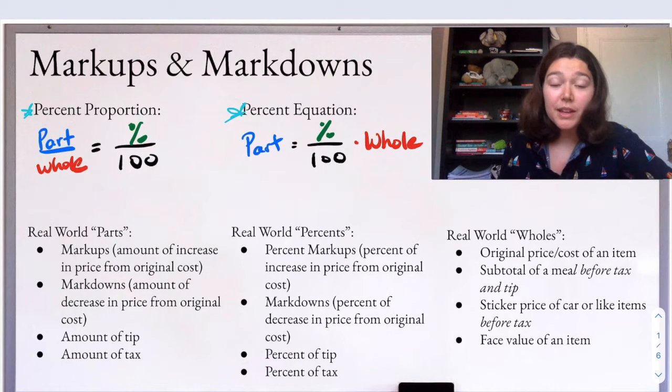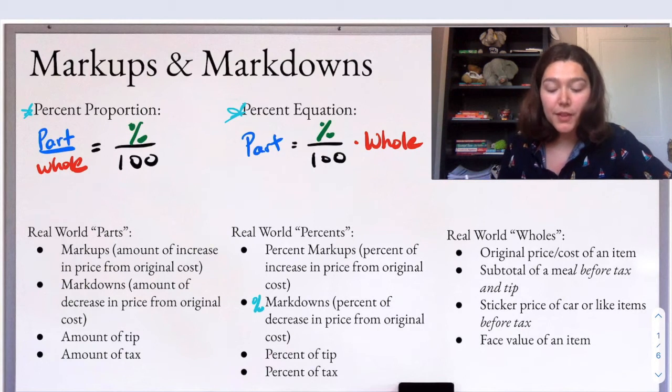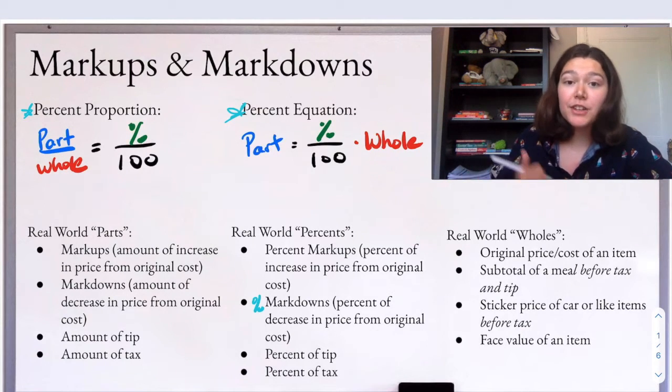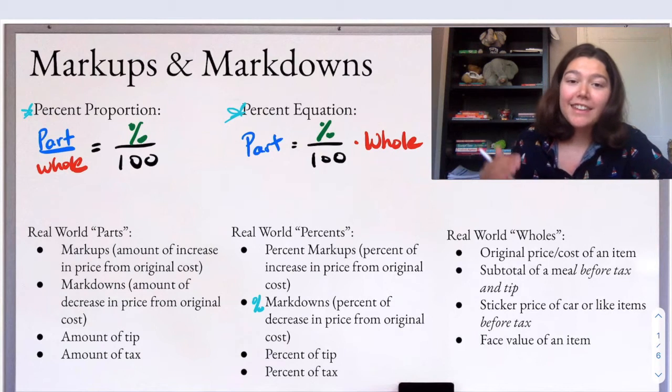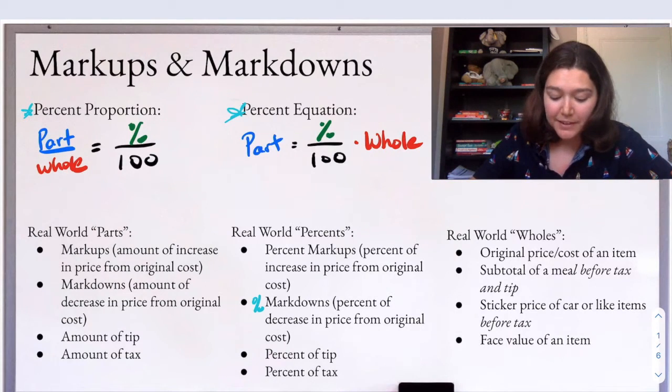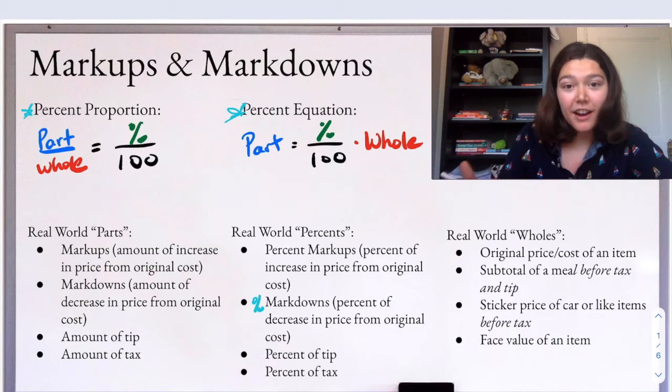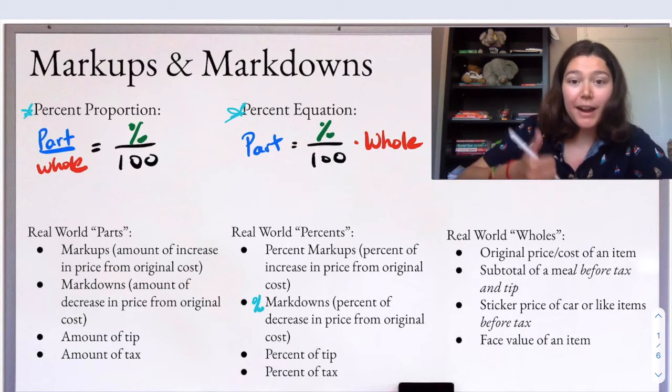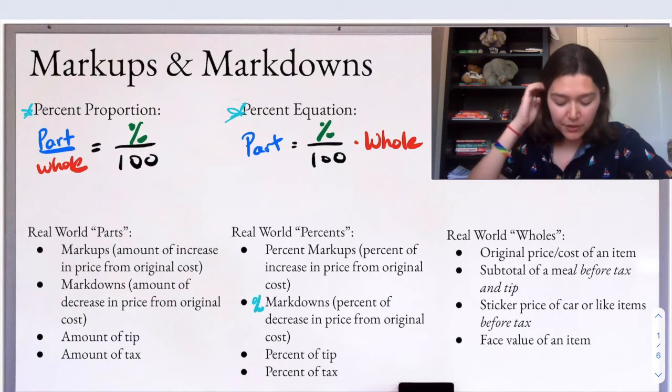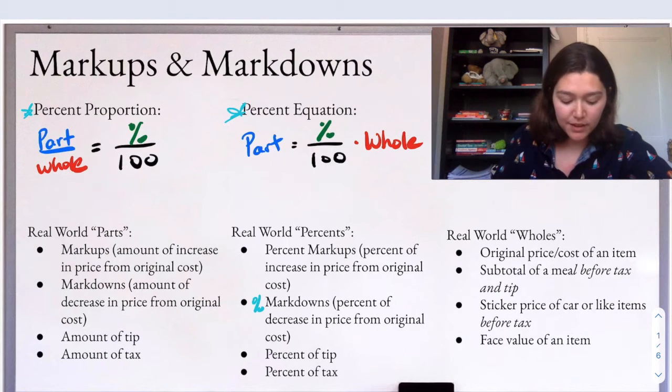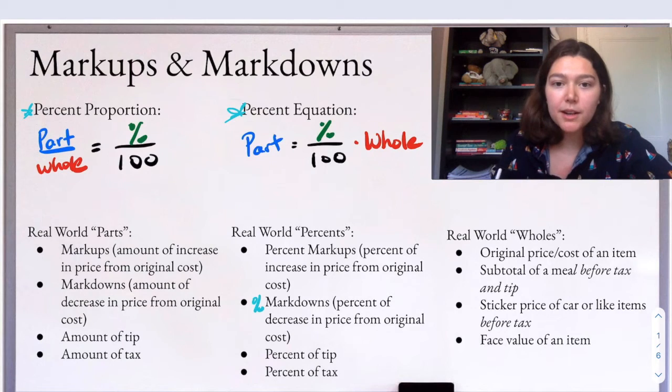Then we have real world percents. So in the markup markdown world, we'll have percent markups and percent markdowns. That's going to be the percent of increase or decrease from an original cost. So when I had that $10 thing, and then I sold it for $15, that's actually going to be a 50% markup. That's the percent of increase from the original price. And then also we have the percent of a tip or percent of a tax, those are also examples, real world examples of percents, and they do somewhat connect to percent markups.